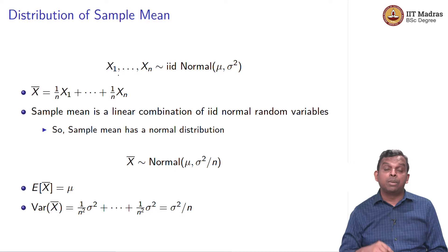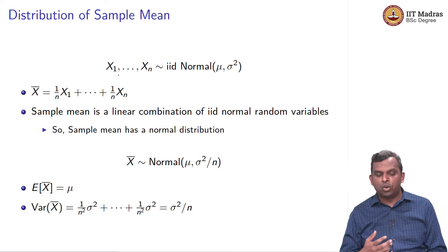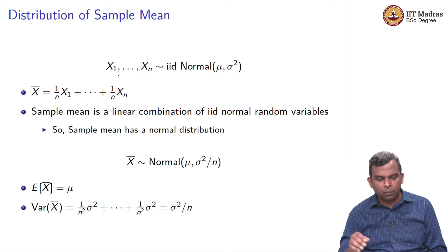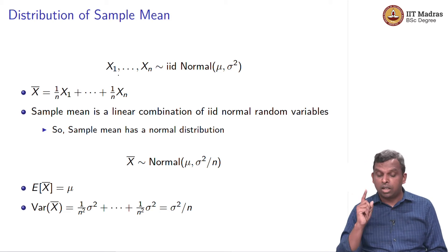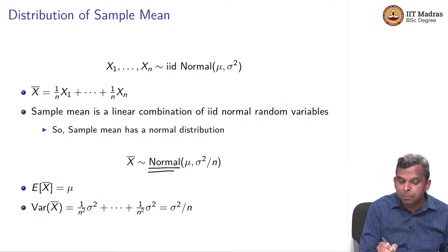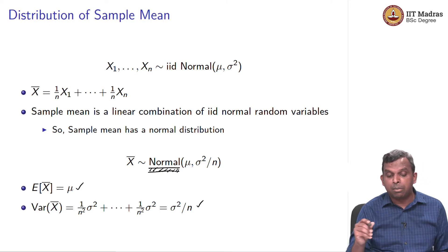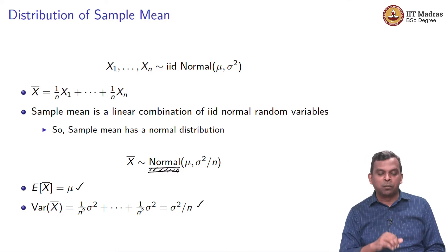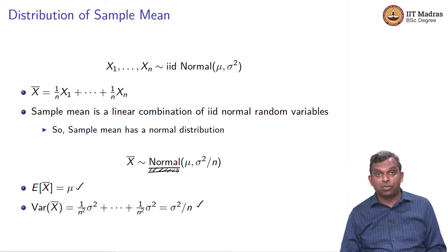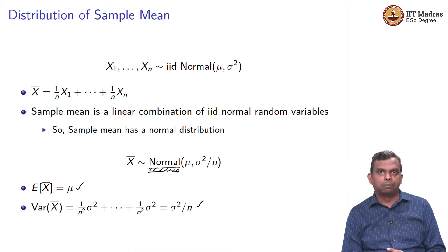The mean of x̄ is μ and the variance of x̄ is σ²/n — both of these we already knew, and they do not require normality. What is special in the normal case is that x̄ itself is normally distributed. x̄ will be normal only when the individual distributions are normal. So the sample mean is exactly characterized: it is Normal(μ, σ²/n).